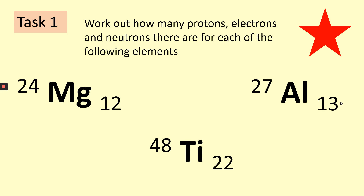In an exam, you might be asked to work out how many protons, electrons, and neutrons there are for individual elements. Task one: work out how many protons, electrons, and neutrons there are for each of the following elements — magnesium, titanium, and aluminium. If you are not sure, rewind the video to find out where we worked them out. Pause the video while you have a go at this task.